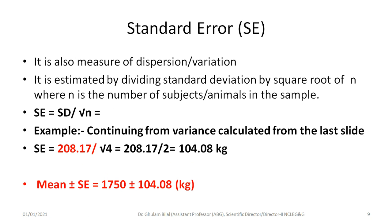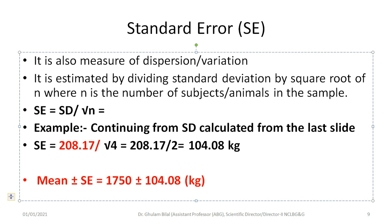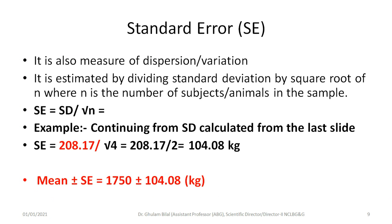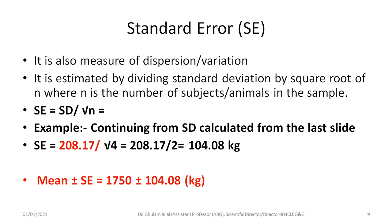We now come to standard error. It is also a measure of dispersion and is estimated by dividing standard deviation by the square root of n, where n is the number of subjects or animals in the sample. Standard error equals standard deviation divided by the square root of n. Continuing from the previous calculation, standard deviation is 208.17. So 208.17 divided by the square root of 4 equals 208.17 divided by 2, which is 104.08. Mean plus or minus standard error is 1750 plus or minus 104.08.